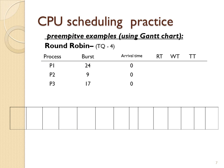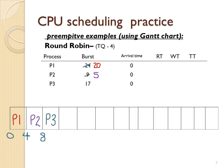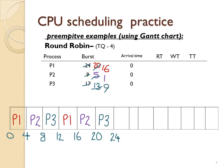Round robin is like first-come first-served, only it is preemptive — each process gets a certain amount of time on the CPU. In this case all processes arrive at time zero and each process gets 4 time units on the CPU. We assume they arrived in this order: P1, P2, P3. P1 goes for 4 time units and has 20 units left. P2 goes for 4 time units and has 5 units left. P3 goes for 4 units and has 13 units left. Then we run through them again: P1, P2, P3. Now the current time is 24 and we have run through each process twice.